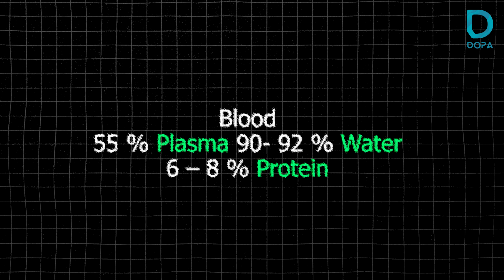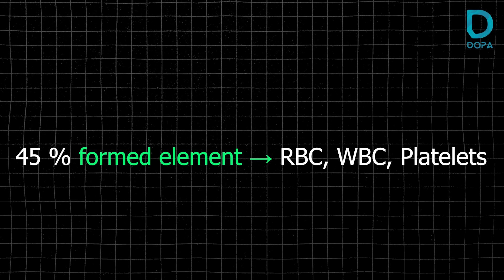In this chapter, blood composition is 55% plasma. Of that plasma, water is 90 to 92% and proteins are 6 to 8%. The formed elements in blood are RBCs, WBCs, and platelets.